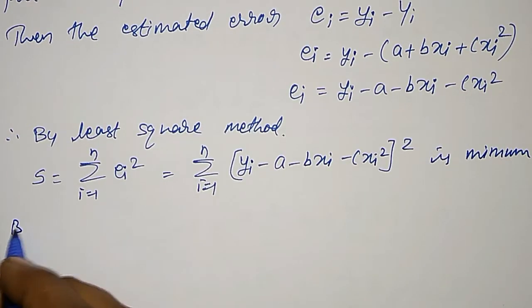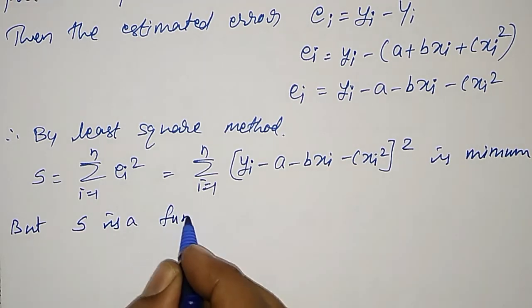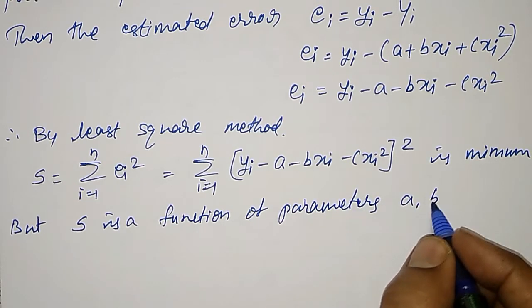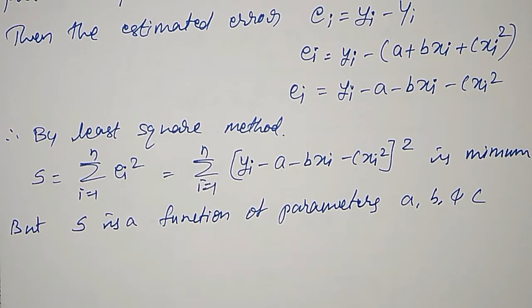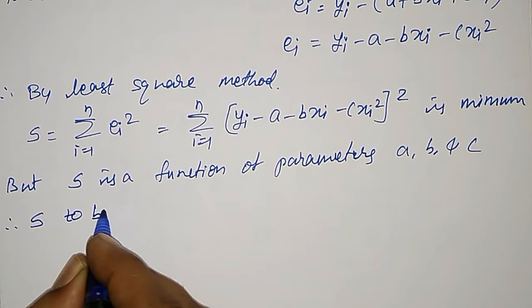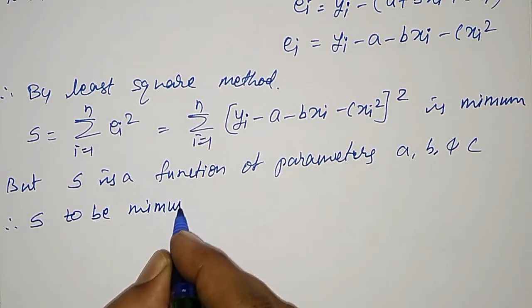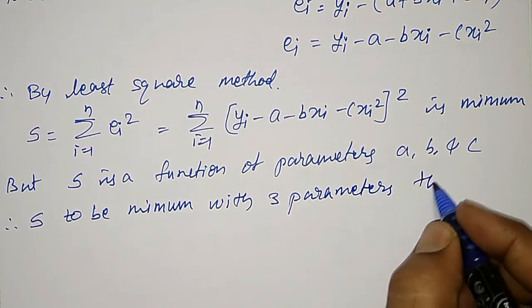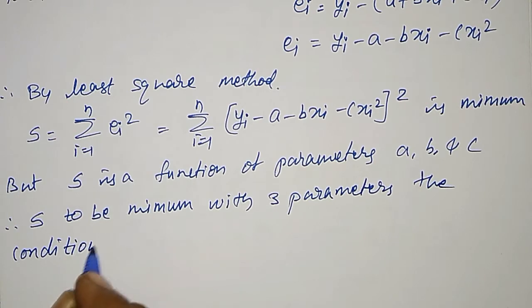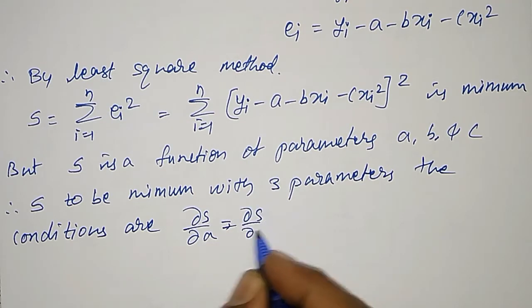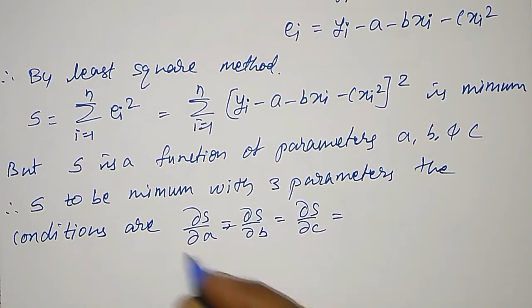S is a function of parameters a, b, and c. To find those parameters such that S is minimum with three parameters, the conditions are: partial derivative of S with respect to a, partial derivative of S with respect to b, and partial derivative of S with respect to c must all be equal to zero. Using these, we find the normal equations.